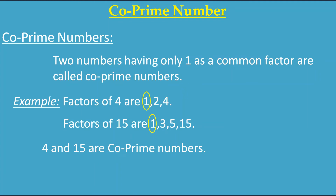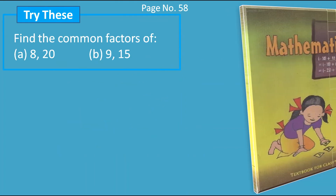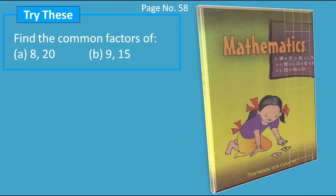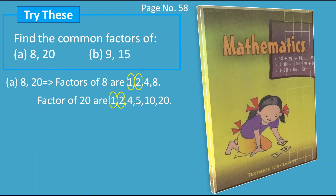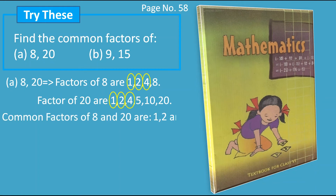Now we will solve the question given on page number 58 from the textbook of CBSE board NCERT Mathematics of Grade 6. The question is to find the common factors. First: factors of 8 are 1, 2, 4, 8, and factors of 20 are 1, 2, 4, 5, 10, 20. There are three common factors: 1, 2, and 4. So the common factors of 8 and 20 are 1, 2, and 4.